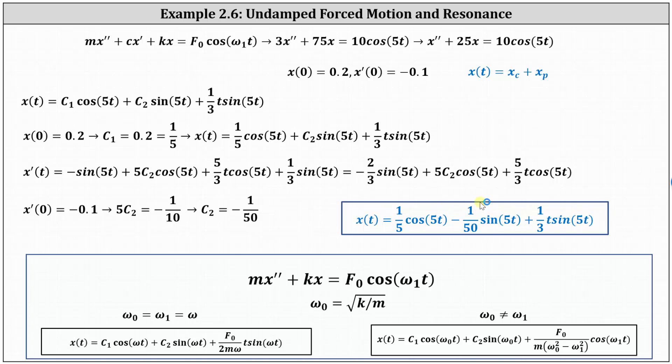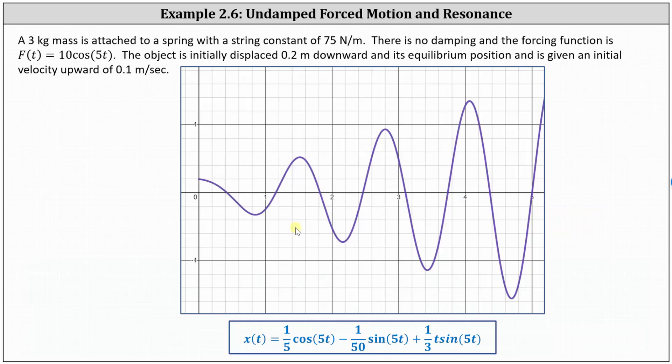Before we go, let's look at the graph of x(t). The complete solution is x(t) = (1/5) cos(5t) − (1/50) sin(5t) + (1/3)t sin(5t). Notice the amplitude is increasing without bound. I hope you found this helpful.